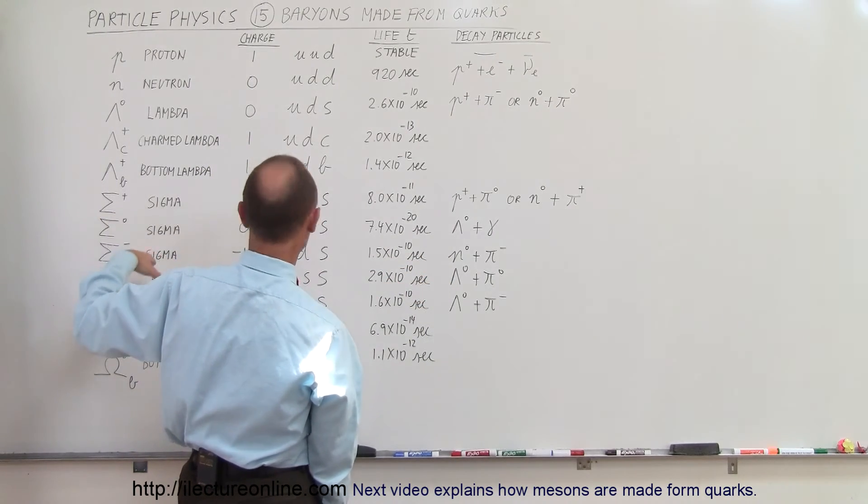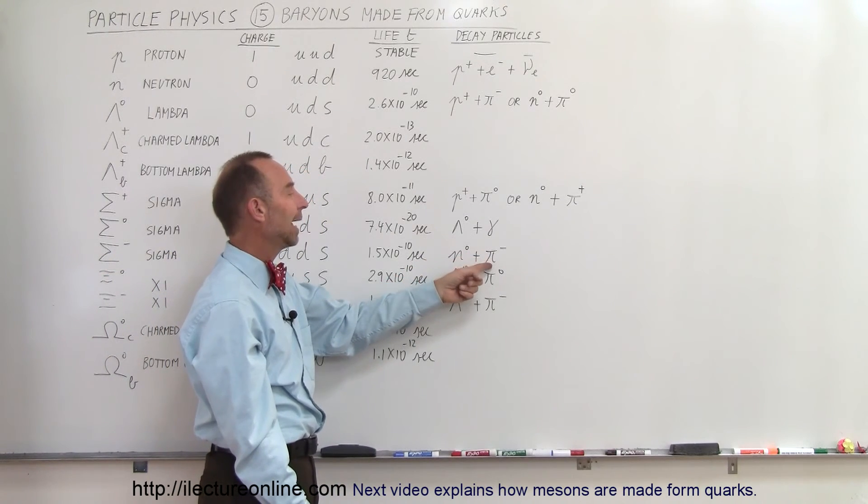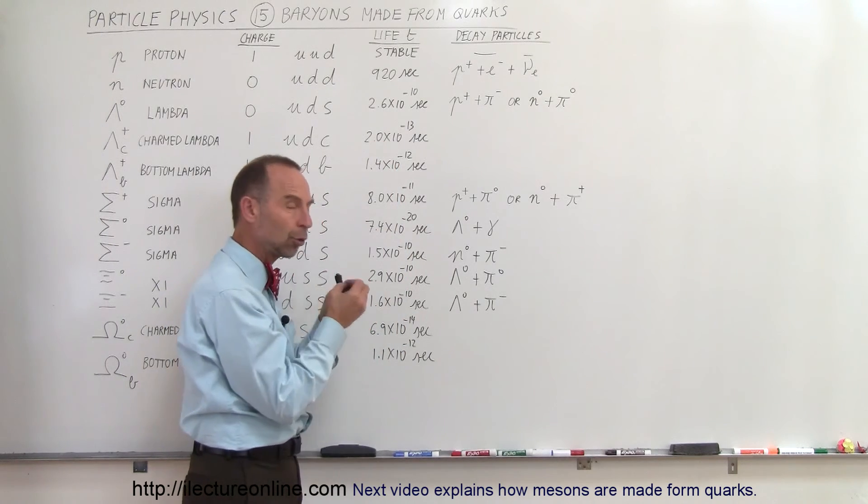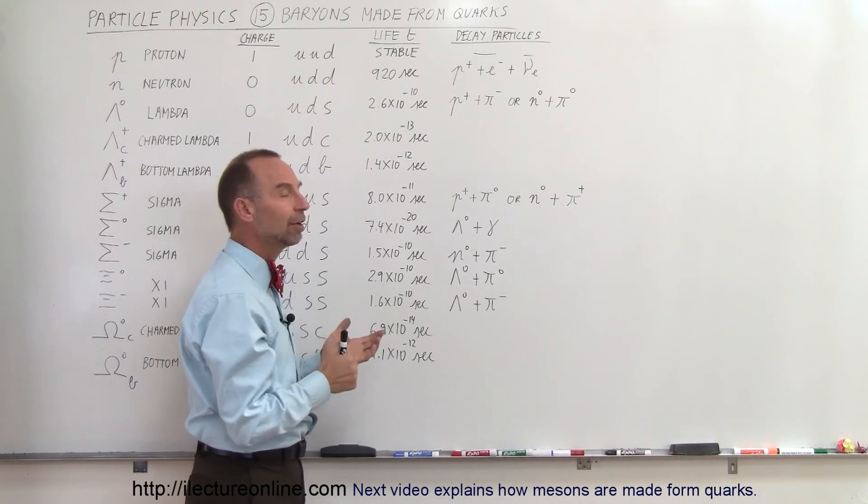If you take a look at a negative sigma, it decays into a neutron and into a negative pion and so forth. So you can see that these particles are only around for a very short period of time, and they're very quickly decaying to something that's very different.